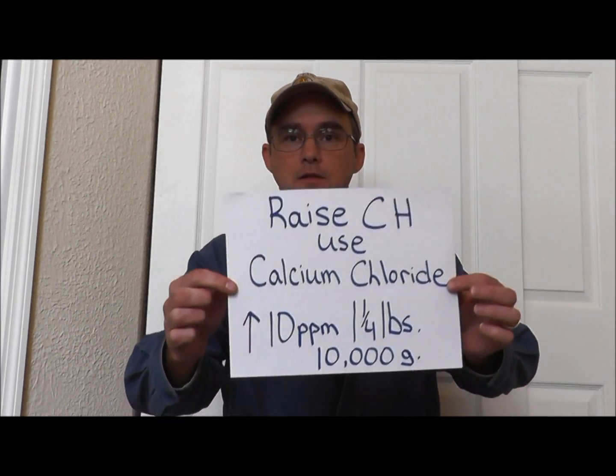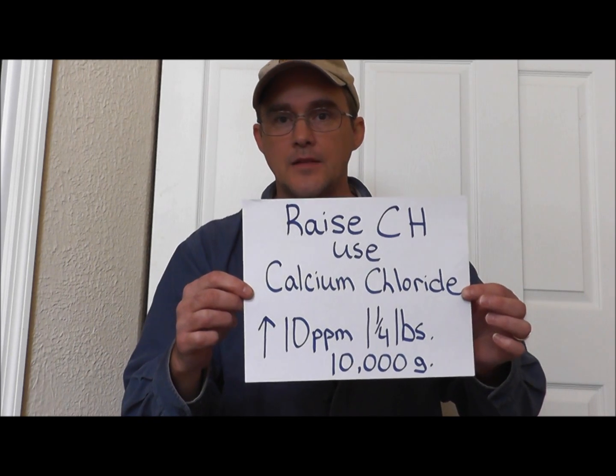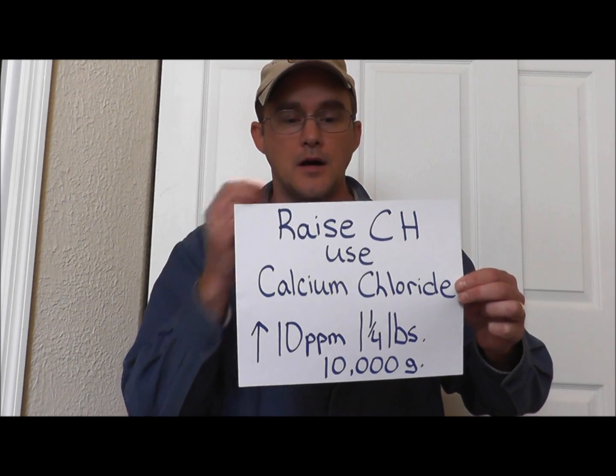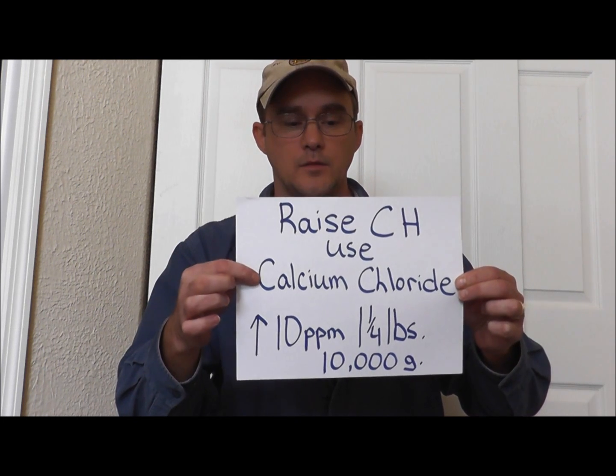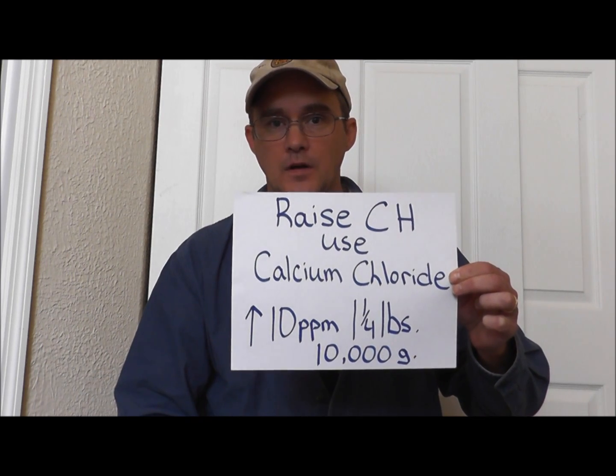Your calcium hardness range needs to be between 150 to 250 parts per million, and you can raise it using calcium chloride — not calcium hypochlorite, that's the chlorine. You want to use calcium chloride. I have this product right here — this is to raise your calcium hardness using calcium chloride, C-H-L-O-R-I-D-E.